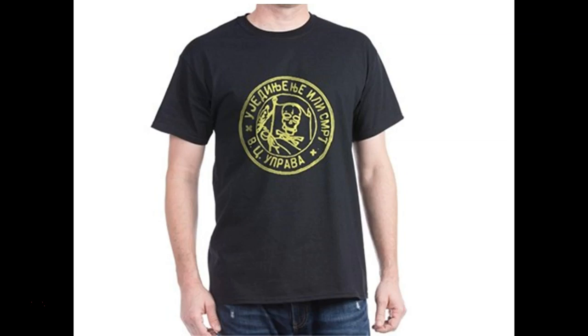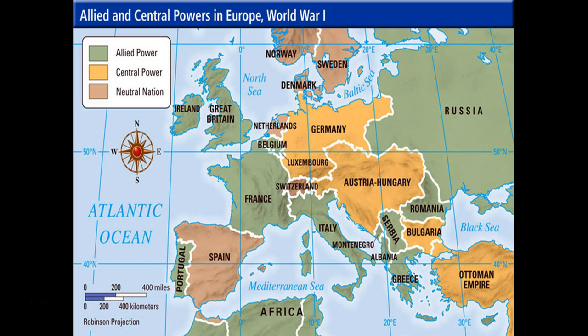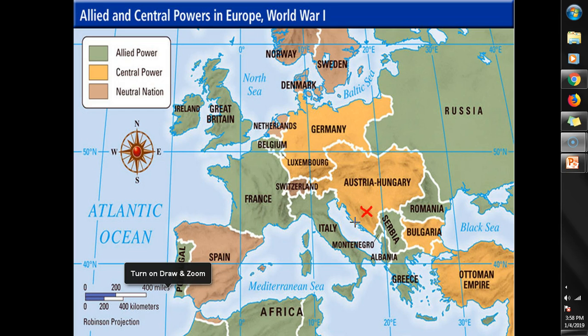The point is: when this happens, everything is set off. Stay with me — if you understand this, you can understand the war. First, northwest of Serbia in Austria-Hungary is the city of Sarajevo. On June 28th, 1914, Austria-Hungary immediately calls up Serbia and says: 'What you did — allowing our Archduke to die, going after him — is reprehensible. This is unforgivable. We're going to give you an ultimatum.'